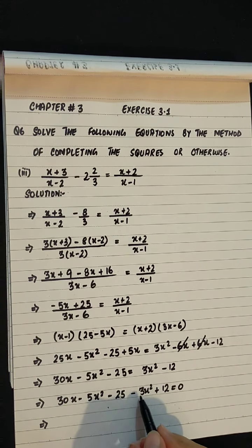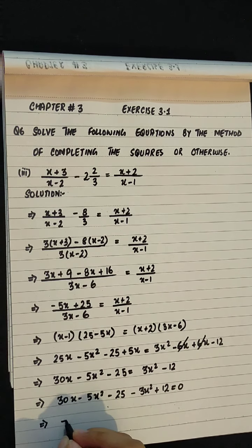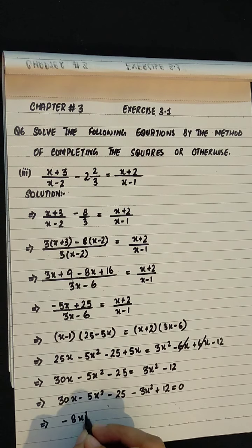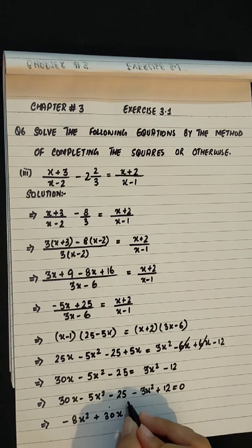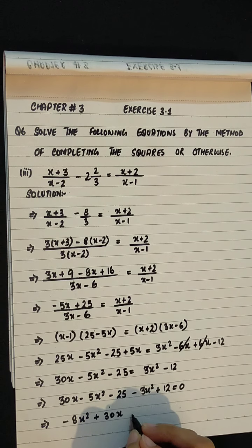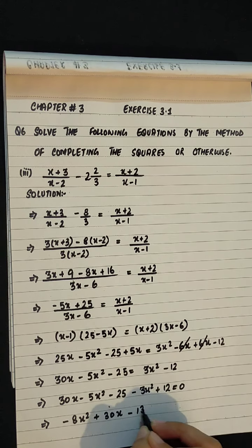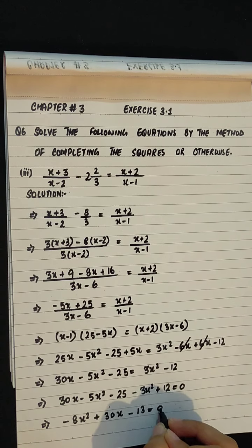Minus 5x square minus 3x square minus 8x square plus 30x minus 25 plus 12 is minus 13 equals to 0.